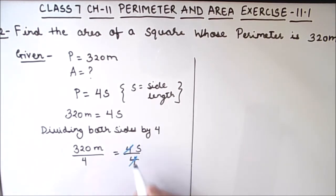These two 4s get cancelled. This is 4 times 1, and 4 times 8 is 32, and 4 times 0 is 0. So the value of s comes out to be 80 meters.